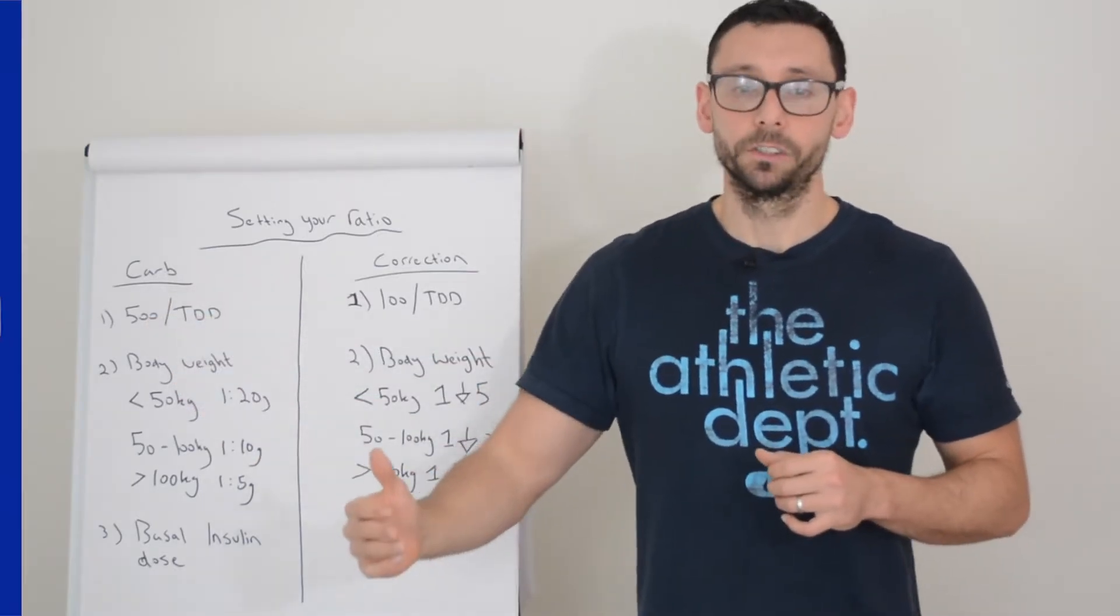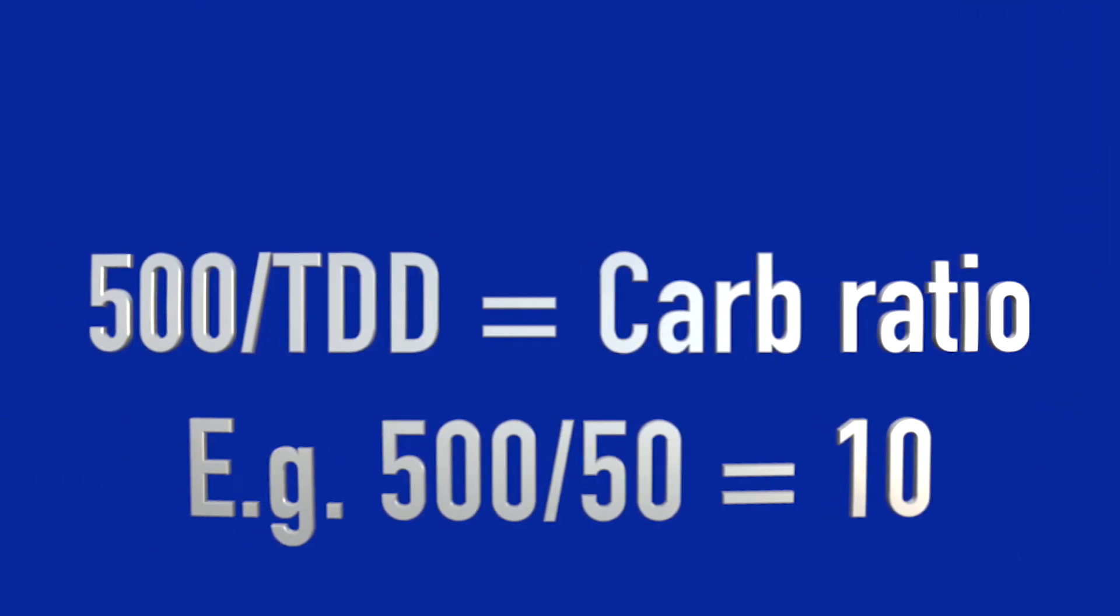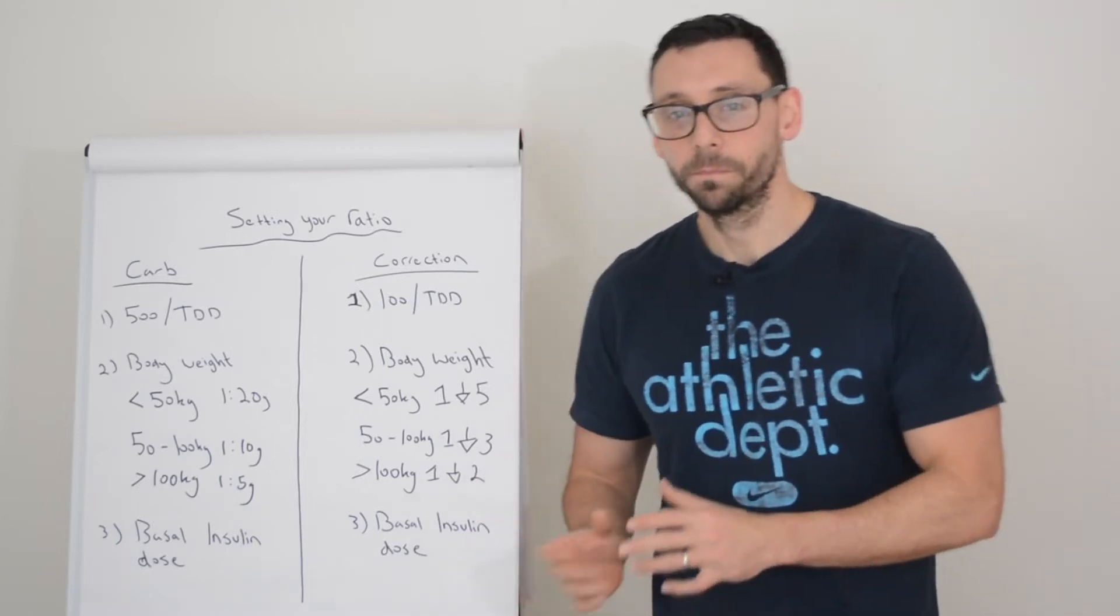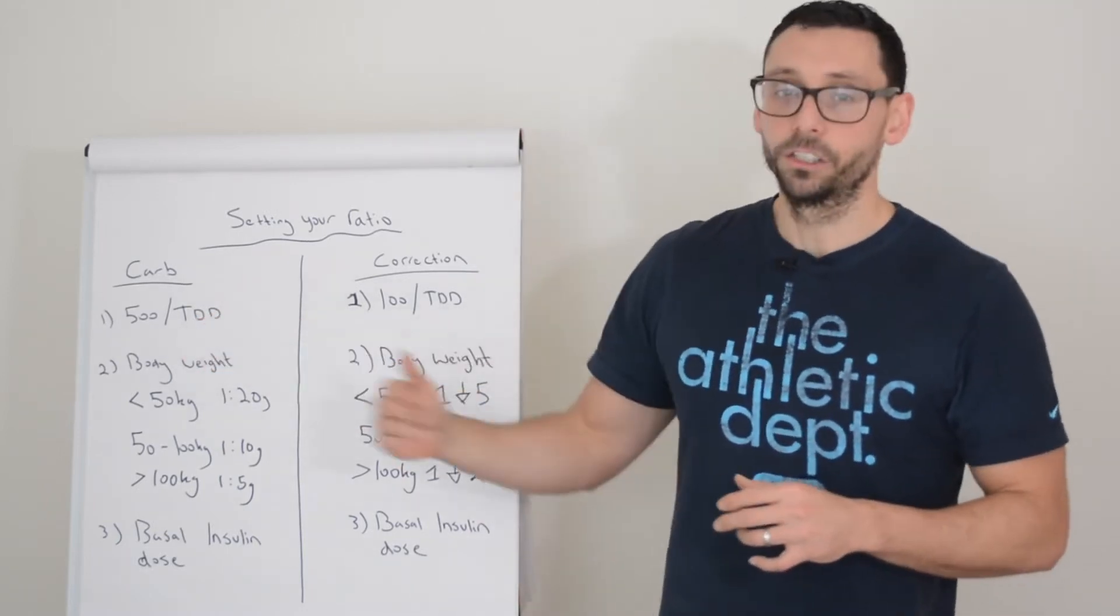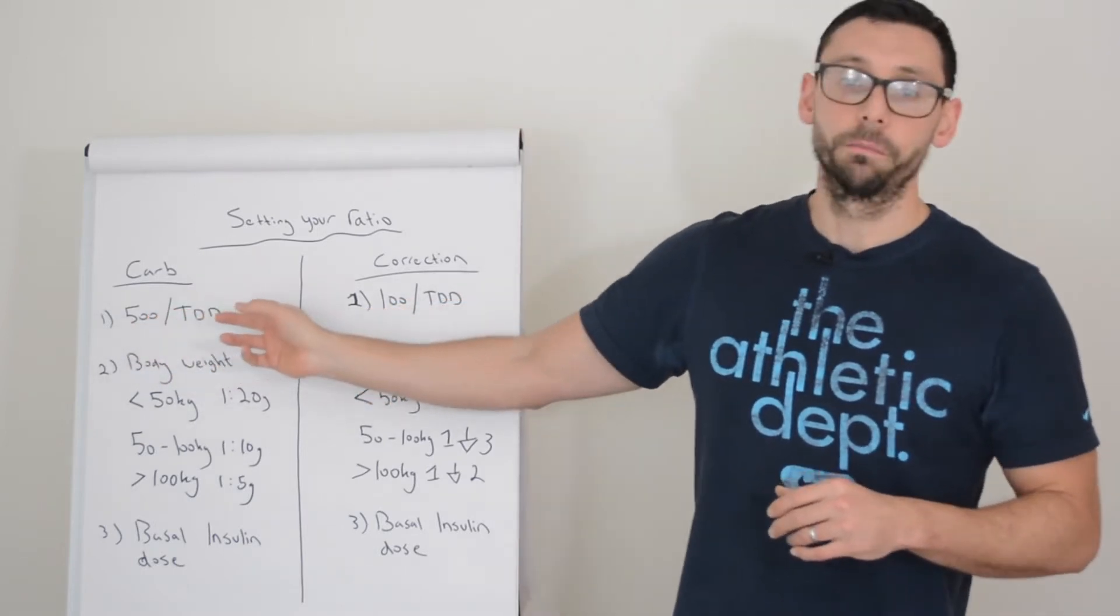So let's say for example my total daily dose is 50 units. I divide 500 by 50 and that gives me a value of 10. So my carbohydrate ratio is one unit for 10 grams. If it was a total daily dose of 100, then my final figure from 500 divided by 100 is 5, and therefore my carbohydrate ratio is one unit for five grams of carbohydrate.